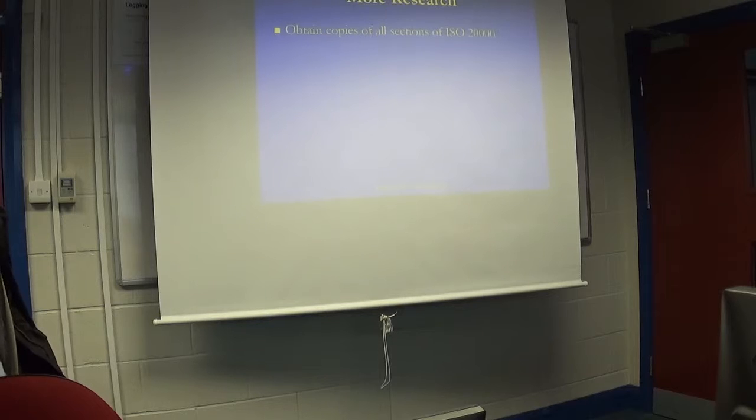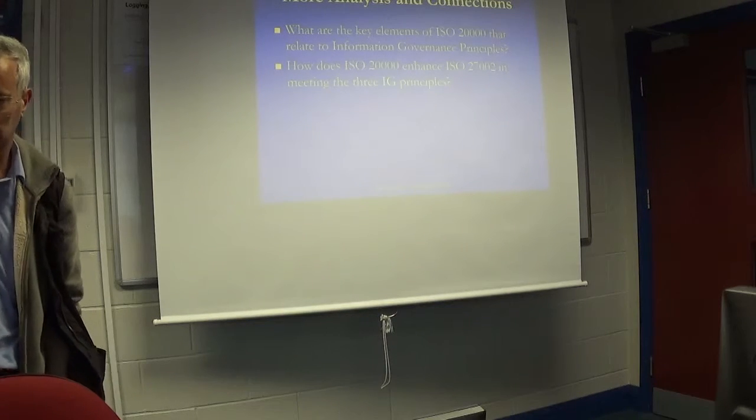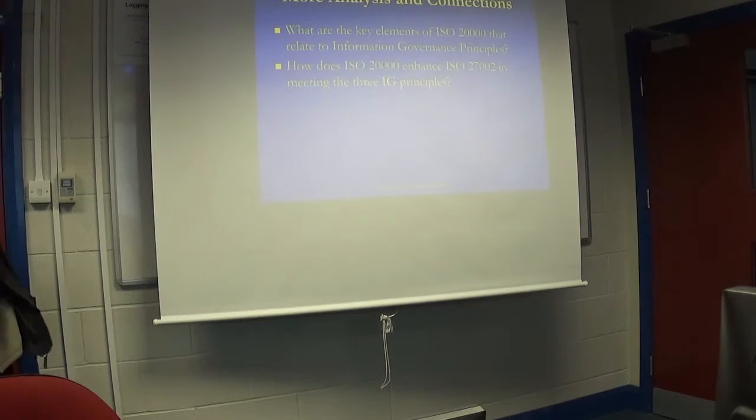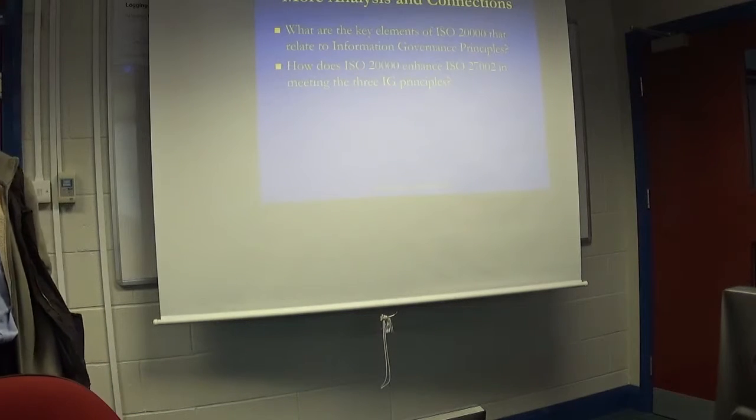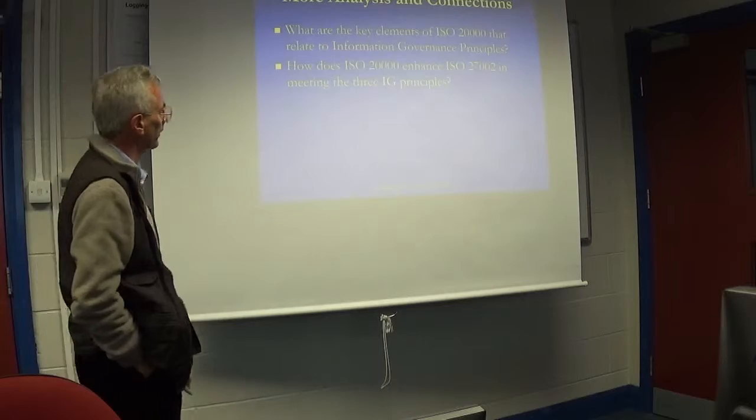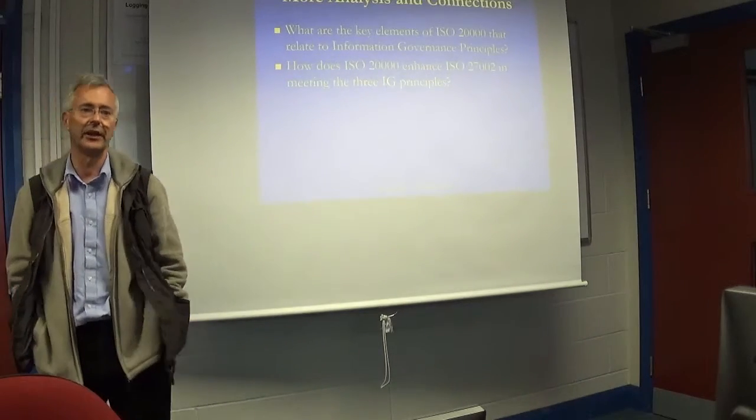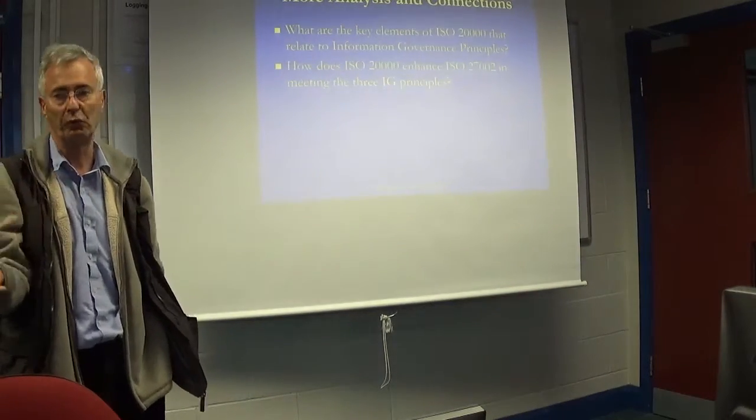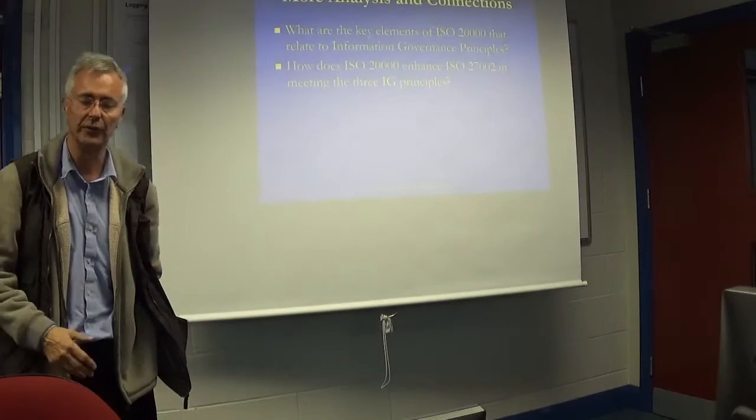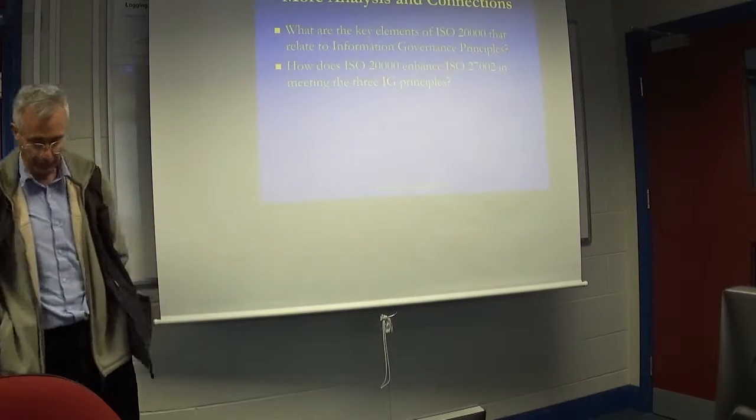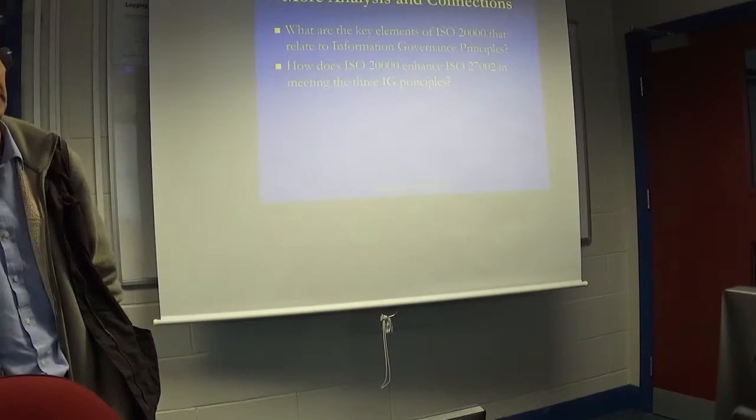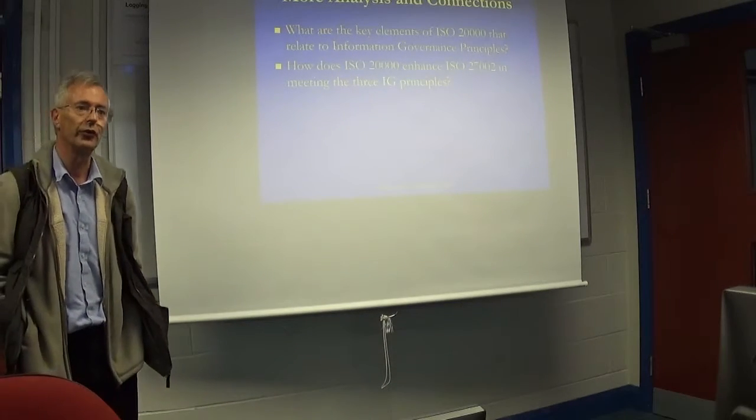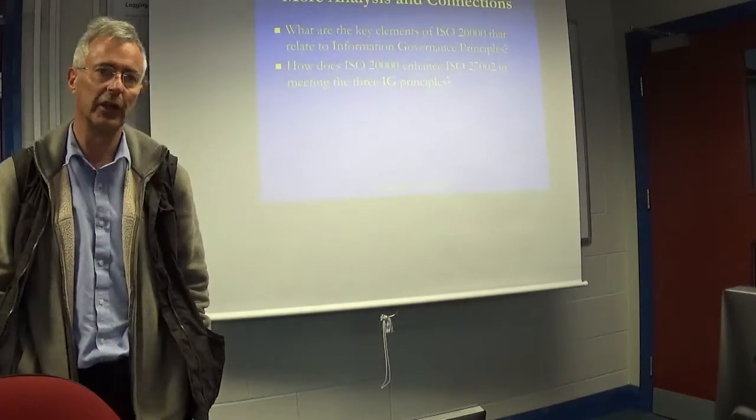ISO 20,000 is a good one to have as well. Have a look at ISO 20,000, see how that connects to information governance principles and how does it connect to ISO 27,002 as well to meet those three standards of confidentiality, integrity and availability. And those three principles actually link to an awful lot in the rest of ISO 27002. The other thing to notice when you look at 27002 is to look at section 0.2, I think it is in the latest version. Because that gives you three foundations for the whole of information governance.